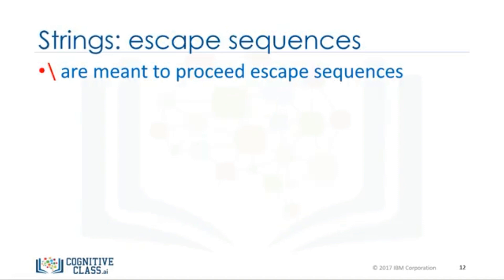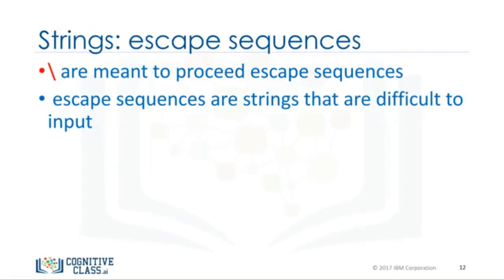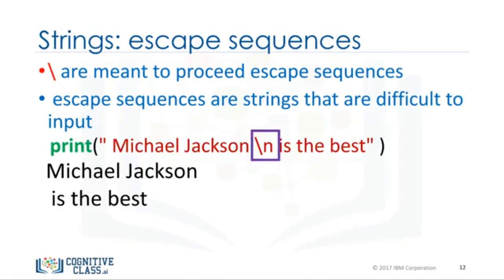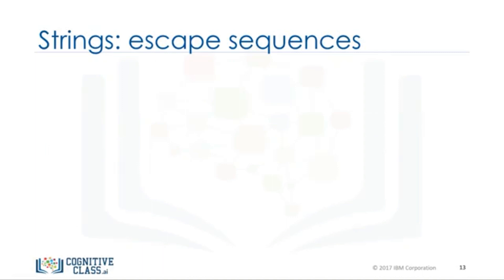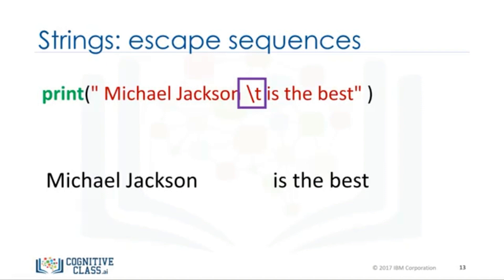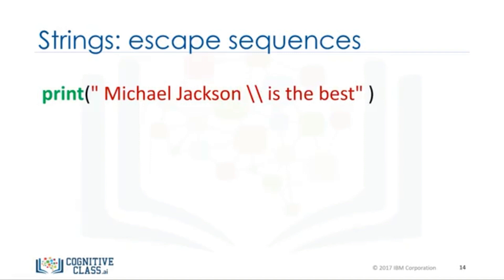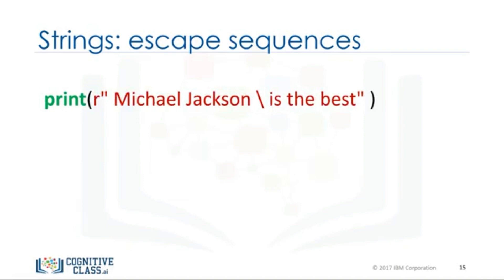The result is a new string that changes from Michael Jackson to Michael Jackson is the best. Strings are immutable. Backslashes represent the beginning of escape sequences. Escape sequences represent strings that may be difficult to input. For example, backslash n represents a new line. The output is given by a new line after the backslash n is encountered. Similarly, backslash t represents a tab. The output is given by a tab where the backslash t is. If you want to place a backslash in your string, use a double backslash. The result is a backslash after the escape sequence.